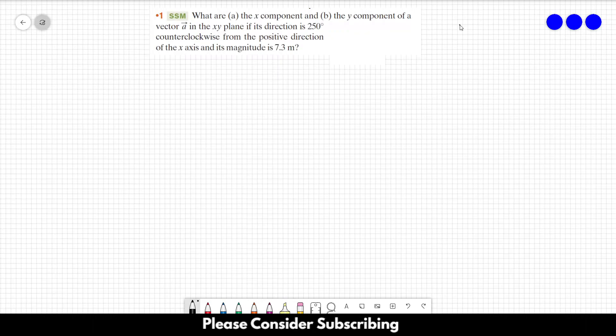Number 1. What are the X component and the Y component of a vector A in the XY plane if its direction is 250 degrees counterclockwise from the positive direction of the X axis and its magnitude is 7.3 meters?